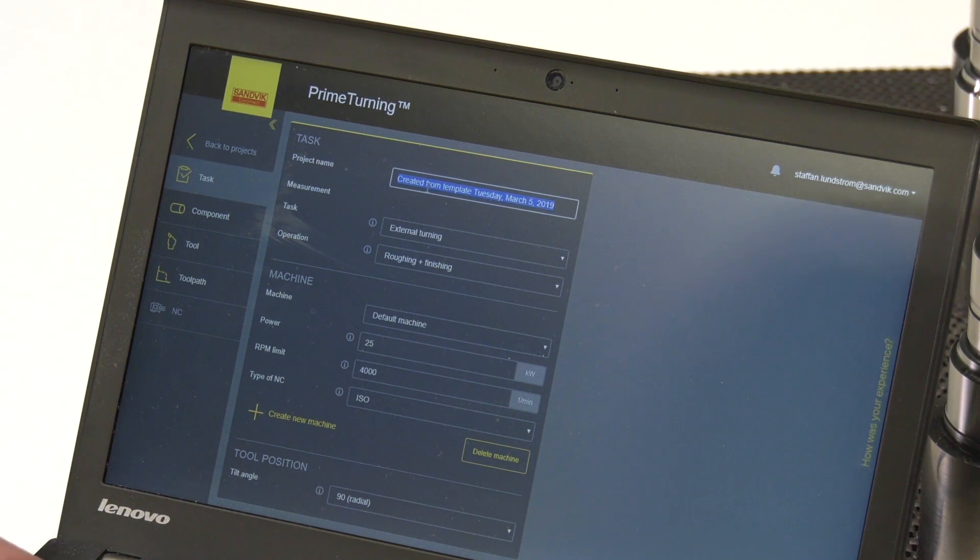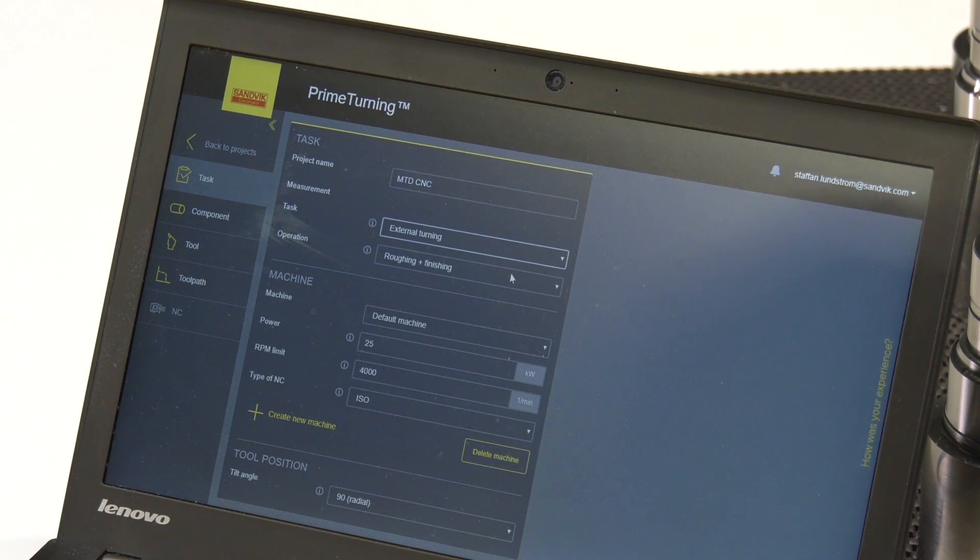And then you can name your project as you like. And today we will do an external turning operation. We will do a roughing cut. And we can also define your machine. Either you use the default machine or you store your own machine library. Today we will run it on a DMG Mori. So you can select some power limitations, RPM limitations and type of NC to generate. And also where your tool is located in the turret.